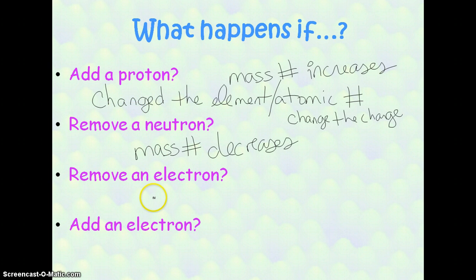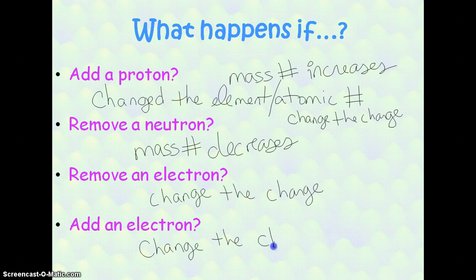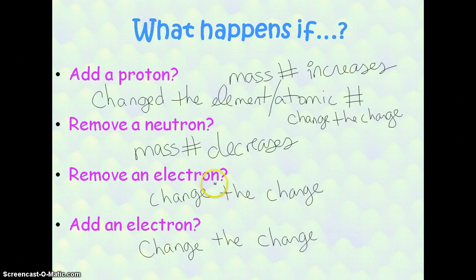If you remove an electron, it does change the charge, but it does not affect the element, the atomic number, or the mass number. If you add an electron, the only thing you're going to change is, again, the charge. So when you add or remove a proton, you're changing the element, the atomic number, the mass number, and the charge. If you remove or add a neutron, you're only changing the mass number. If you remove or add an electron, you are only changing the charge.